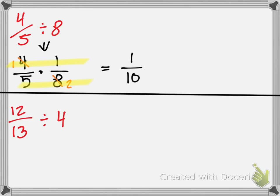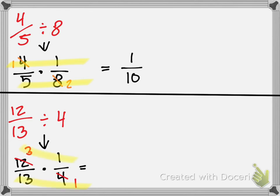Sophie, what about the next one? Twelve-thirteenths times one over four. Can I cross-cancel? Cross out the twelve and the four — they're both divisible by four. Four becomes one and twelve becomes three. Cross-multiply and we get three-thirteenths.